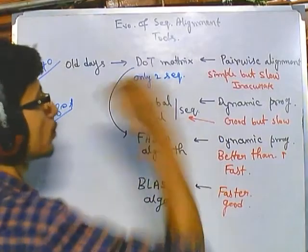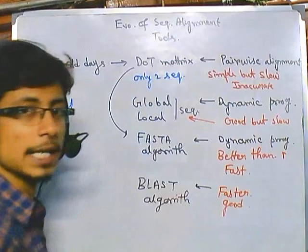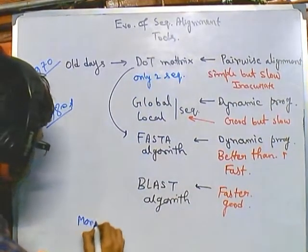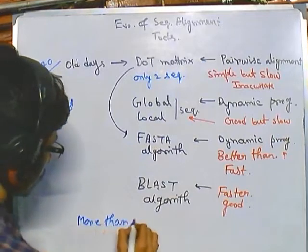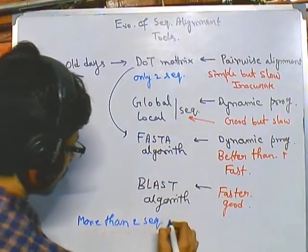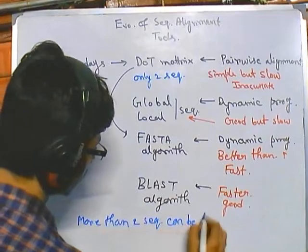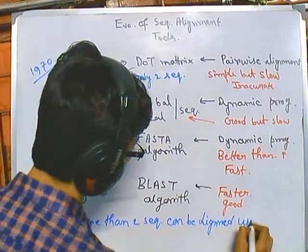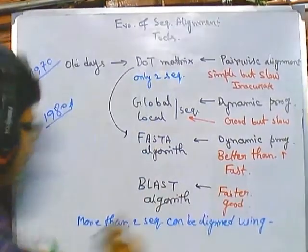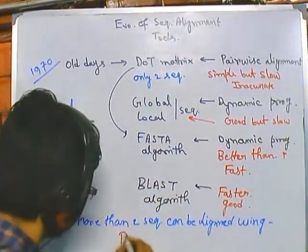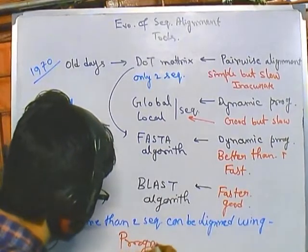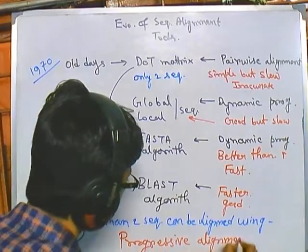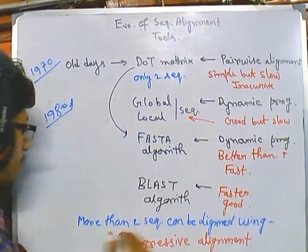For more than two sequences, we utilize pairwise alignment for two sequences, but for more than two sequences we use a different type of alignment technique called progressive alignment. Progressive alignment allows us to align multiple sequences together.